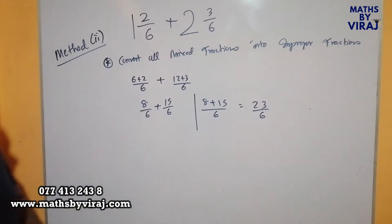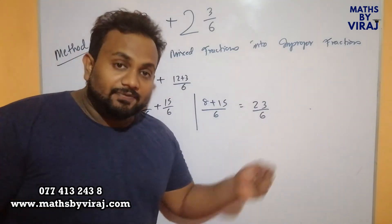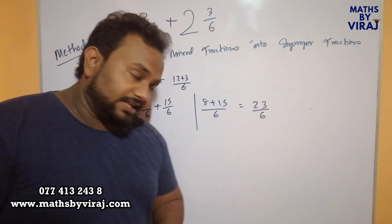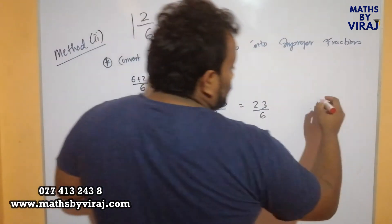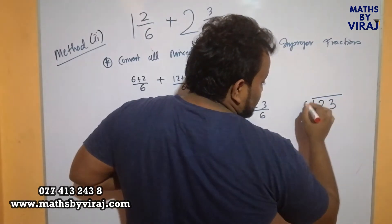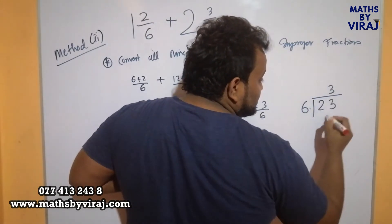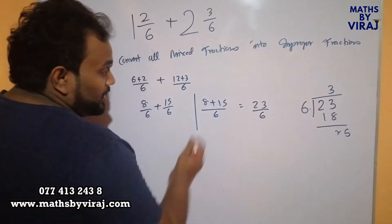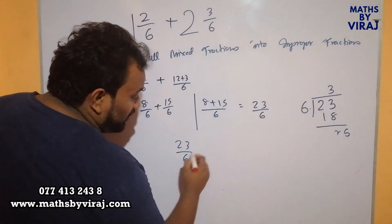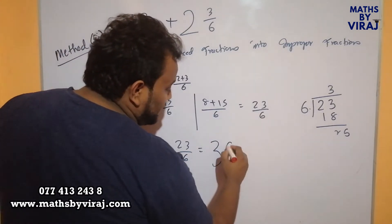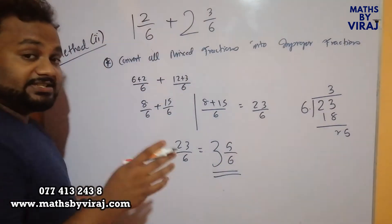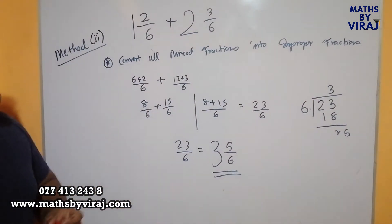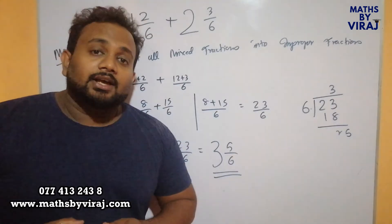Now you see that 23 over 6 is an improper fraction, so I should convert it into a mixed fraction. What I have to do is divide 23 by 6. 6 times 3 is 18, and what is remaining is 5. Therefore 23 over 6 can now be written as whole number 3 and 5 over 6, which is equal to the previous answer we got in method 1.